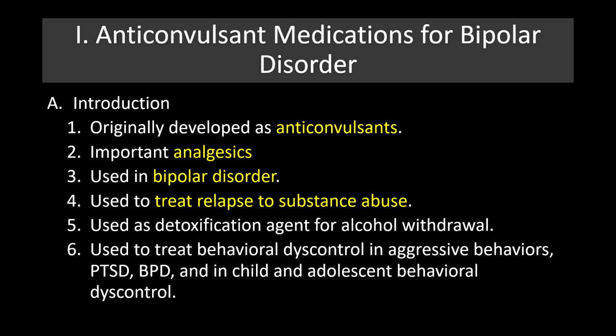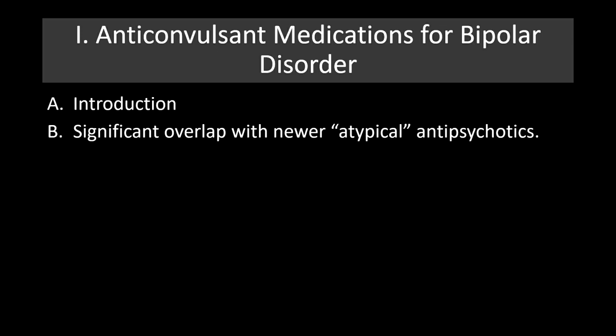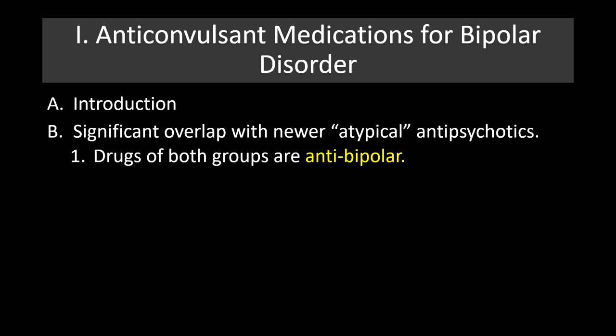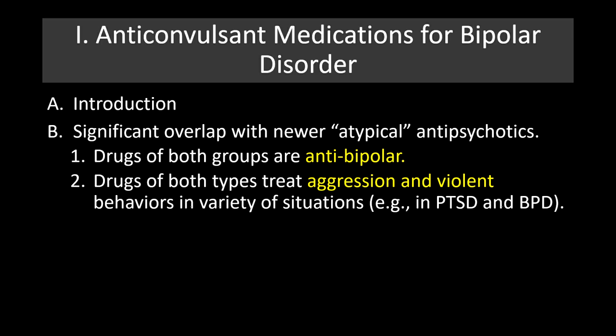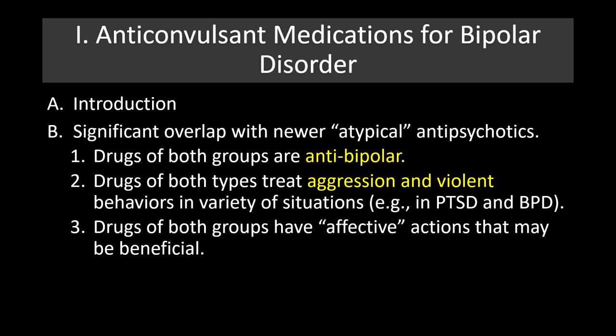These drugs have significant overlap with newer atypical antipsychotics. Drugs in both groups can be used to treat bipolar disorder, aggression, and violent behaviors in situations such as PTSD and bipolar disorder. Both groups also have affective actions that may benefit mood. Importantly, all of these drugs are teratogens, so it's critical for women who are considering pregnancy or who are pregnant to talk with their doctor about whether these drugs are appropriate.